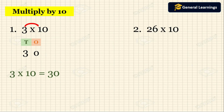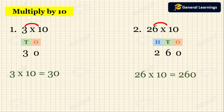Now we will see another example. They have given 26 into 10. Since 10 has one zero, when we multiply a number by 10 we write one zero to the right of the number, that is in the ones place. Then multiply the remaining number: 26 into 1 we get 26. So 6 should be written in the tens place and 2 should be written in the hundreds place. So 26 into 10 we get 260.